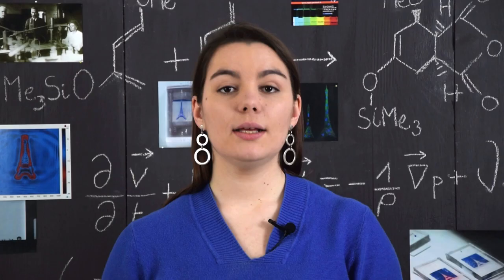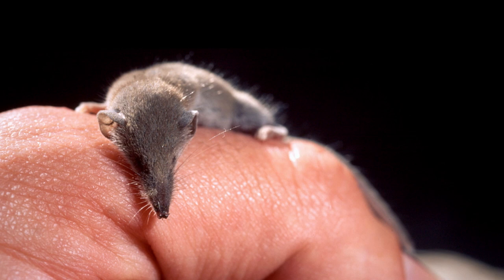See this cute little thing? It's called an Etruscan shrew. It's the lightest mammal on earth. Unfortunately, this one wasn't eating when the picture was taken. And this is quite bad.